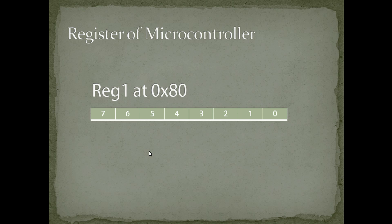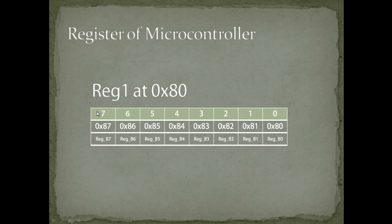Now assume we have an 8-bit microcontroller with a register named reg1 located at address 0x80. This is an 8-bit wide register from bit 0 to bit 7. If the register is located at 0x80, that means bit 0 is at address 0x80, bit 1 is also at 0x80 as register bit 1, and so on up to bit 7 which is at address 0x87. For each individual bit, we can write either 1 or 0.